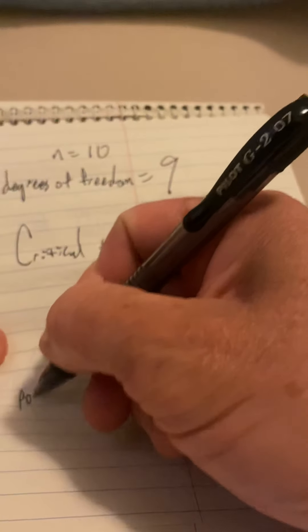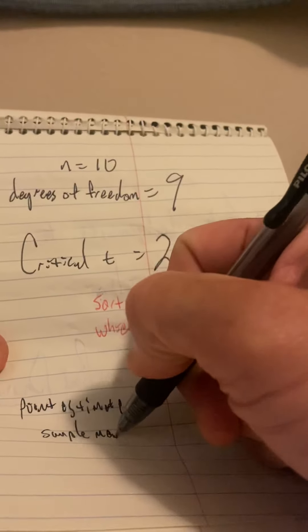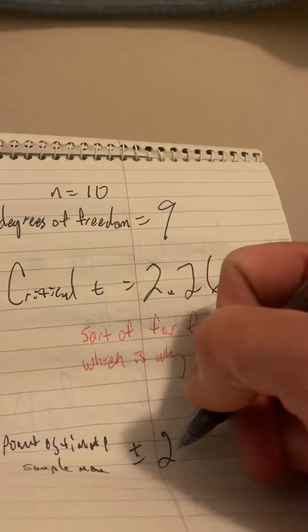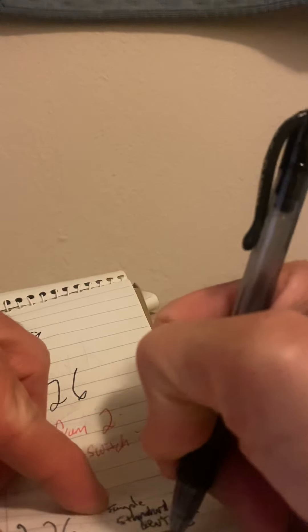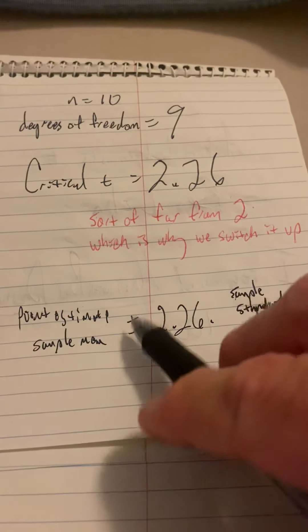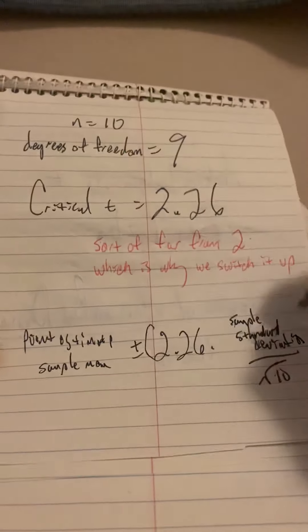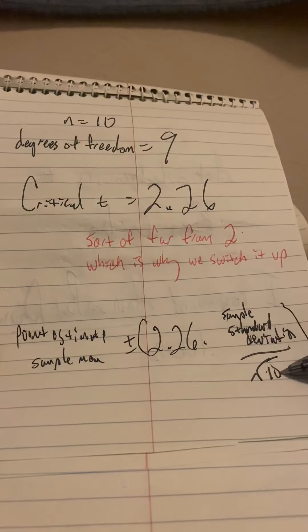You're going to get your confidence interval by taking your point estimate, which is just your sample mean, and add and subtract 2.26 times your sample standard deviation divided by the square root of your sample size, which is 10. So you're going to take your point estimate, which is your sample mean, and add and subtract this product, which is 2.26 times the sample standard deviation divided by the square root of 10. Math made simple, Ed Simpson Math.